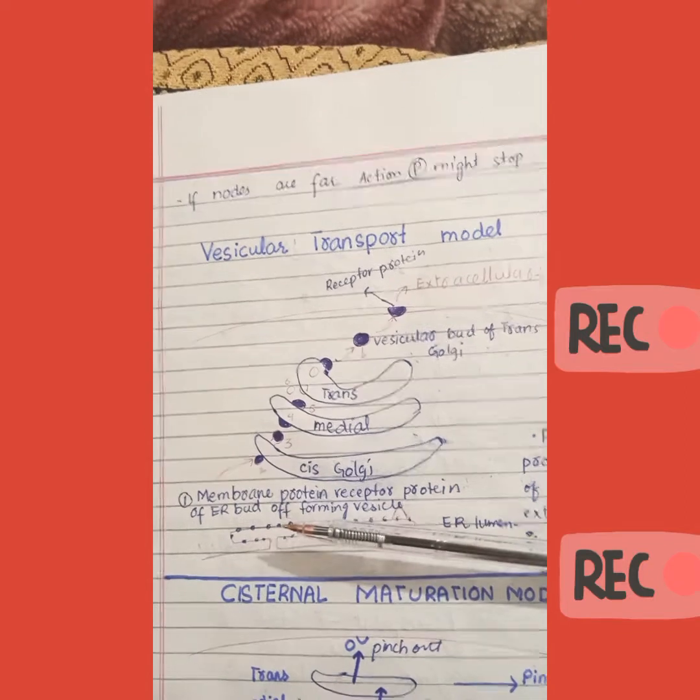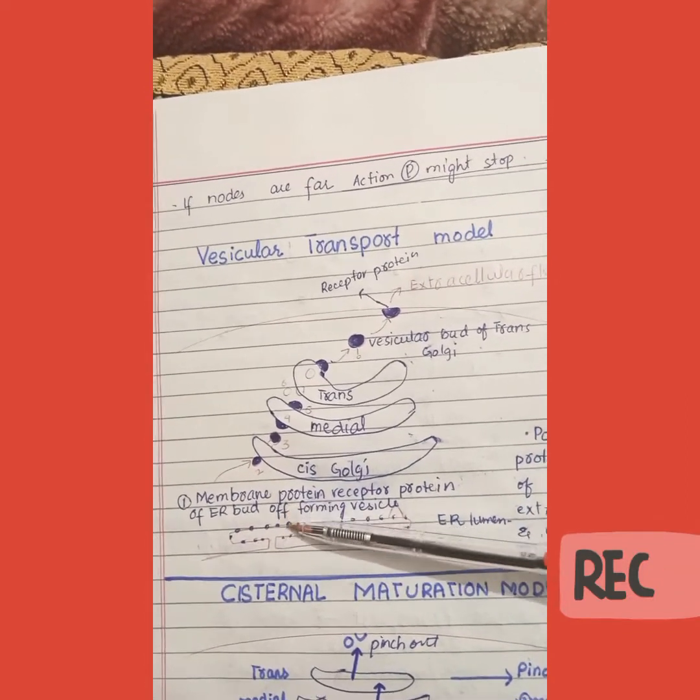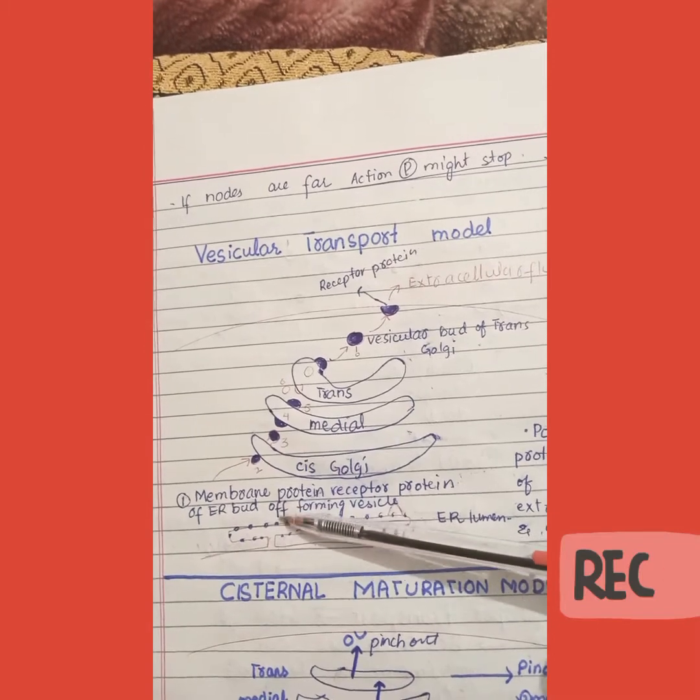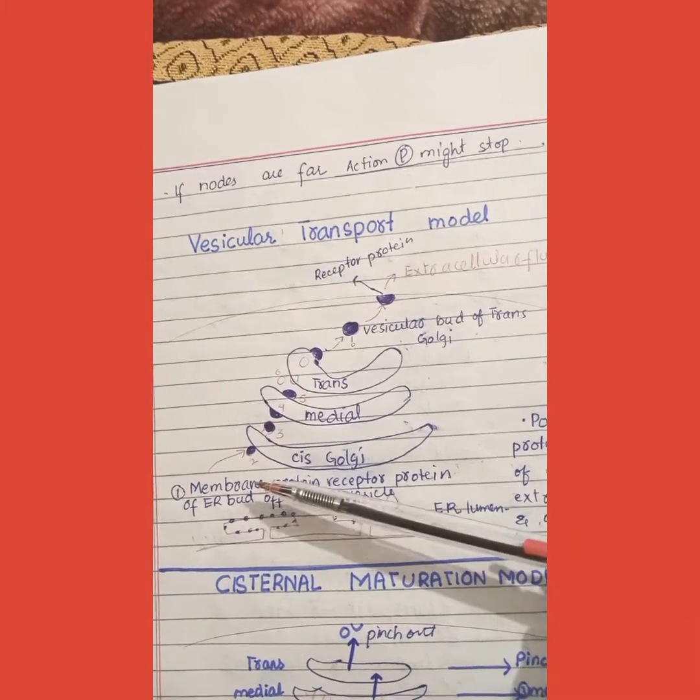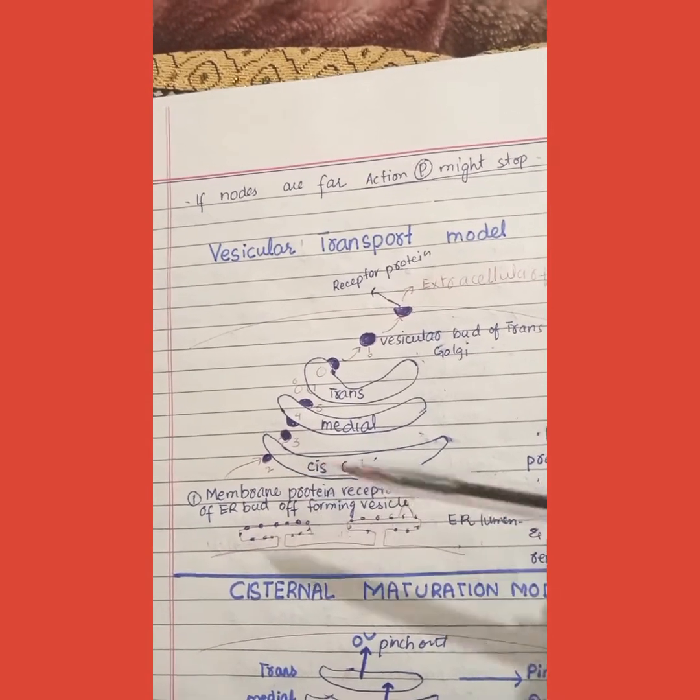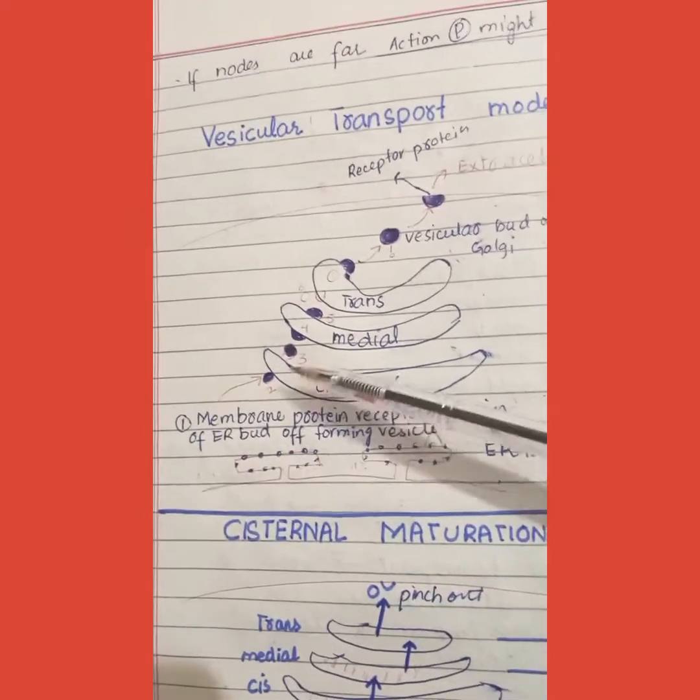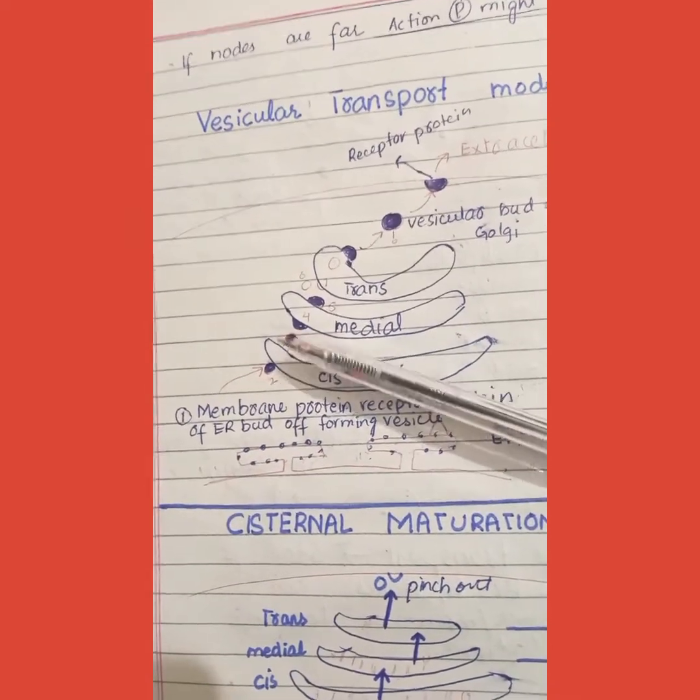The vesicular transport model is about how proteins are transferred. The endoplasmic reticulum will be budding, so the protein will bud off from the vesicle and combine with the cis Golgi. After this part is released, it will be made with the medial Golgi.